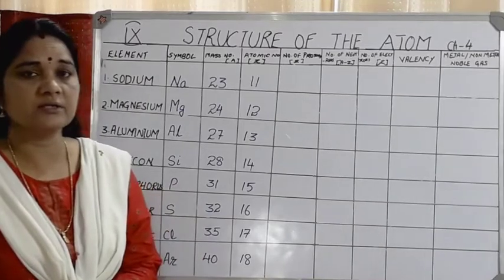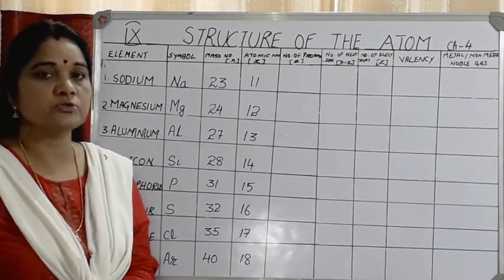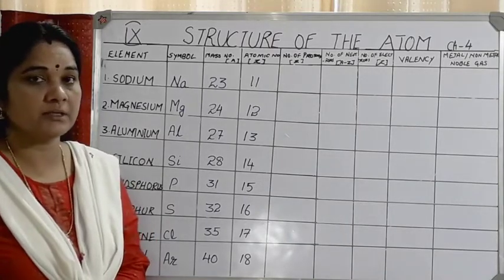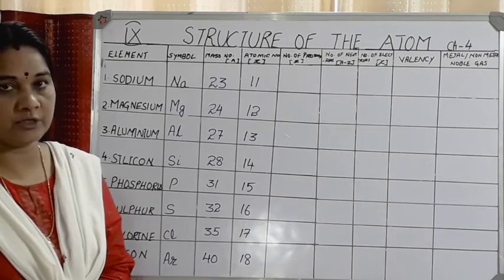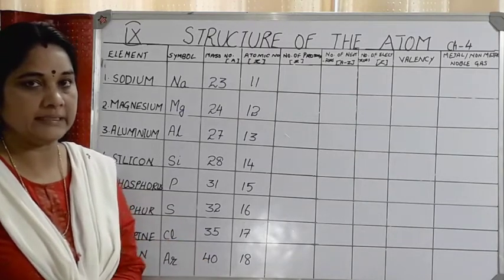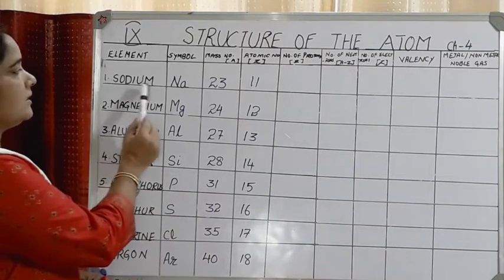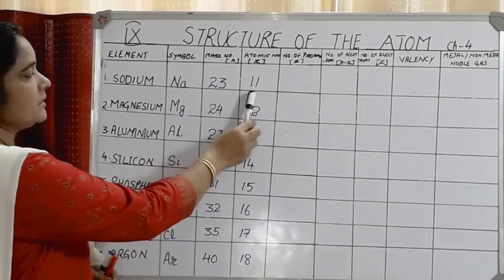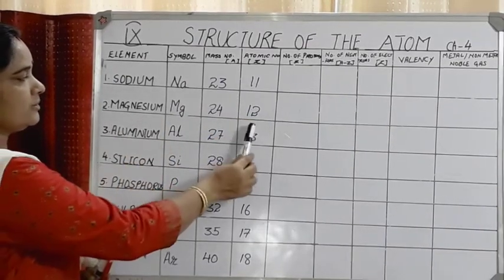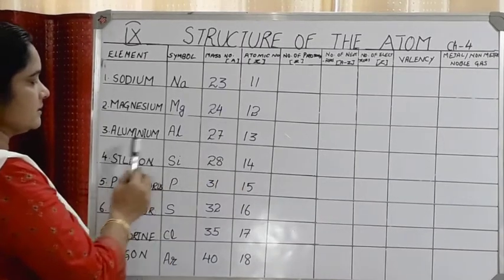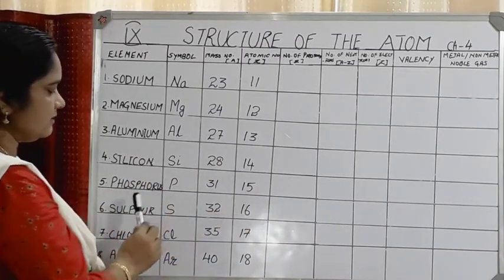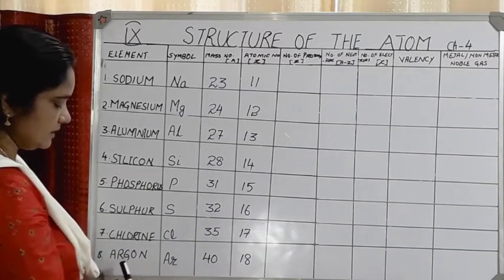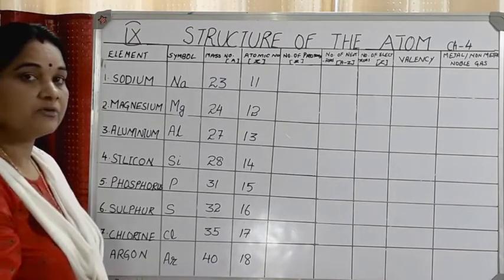Now let's find the number of protons, neutrons, electrons, valency, and whether each element is a metal or non-metal for elements 11 to 18. In the periodic table, element number 11 is sodium (Na), atomic number 11. Next is magnesium, atomic number 12. Aluminium is atomic number 13, silicon is 14, phosphorus is 15, sulfur is 16, chlorine is 17, and argon has atomic number 18.